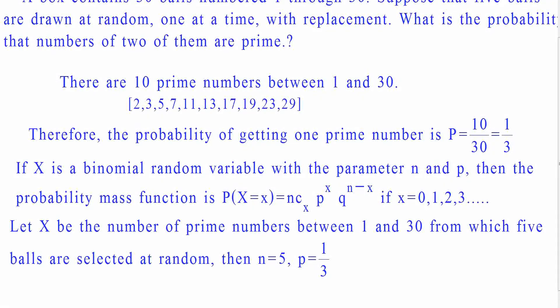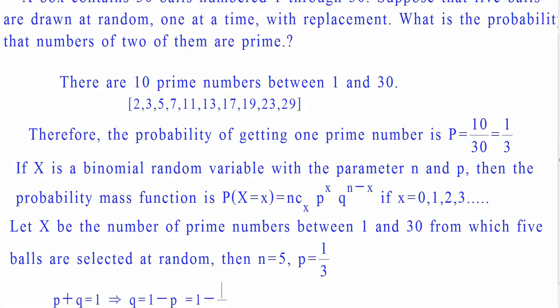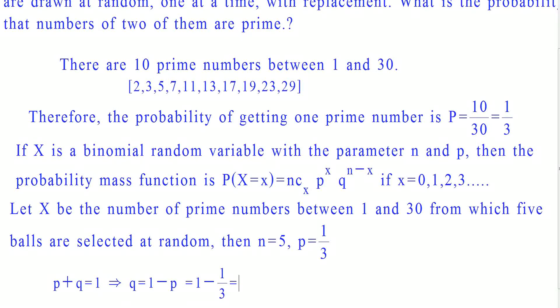Here we consider p as the favorable outcome and q as the non-favorable outcome. We know that the total probability is favorable outcome plus non-favorable outcome, which is equal to 1. That is, p plus q is equal to 1, which can be written as q is equal to 1 minus p. Since p is equal to 1 by 3, we get q is equal to 2 by 3.